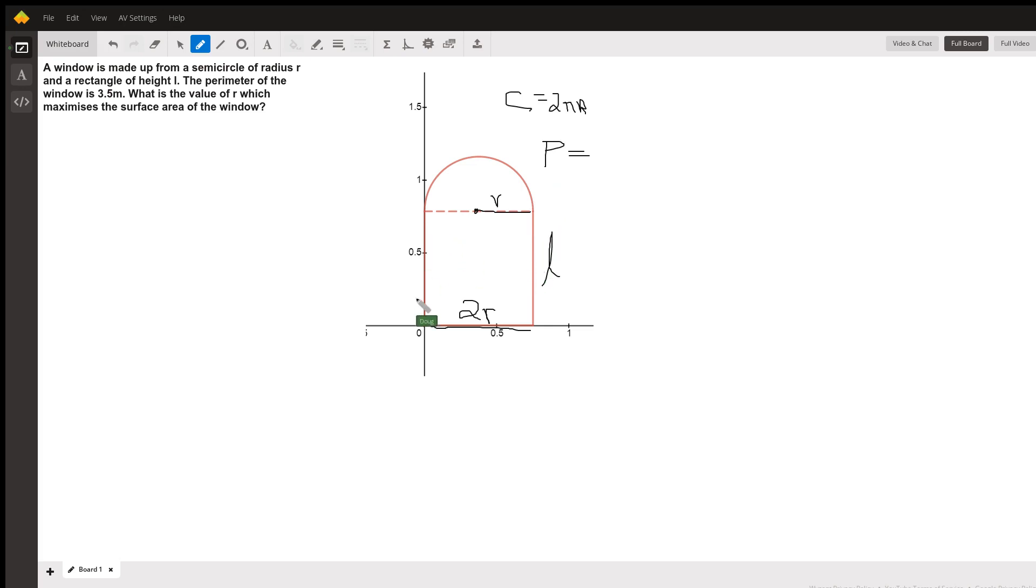Well, there's two L's. There's this 2R. And this distance around the semicircle is half of 2πR or πR. But we know that that equals 3.5. So this is what we've got so far.